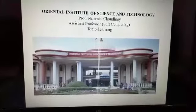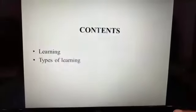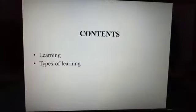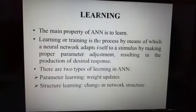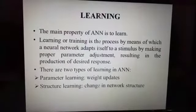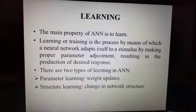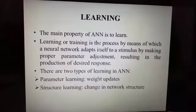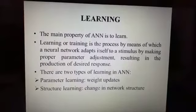Hello students, this is Namrata Chaudhary. My video topic is learning and types of learning. The main property of ANN is to learn. Learning or training is the process by which a neural network adapts itself to a stimulus by making proper parameter adjustments.